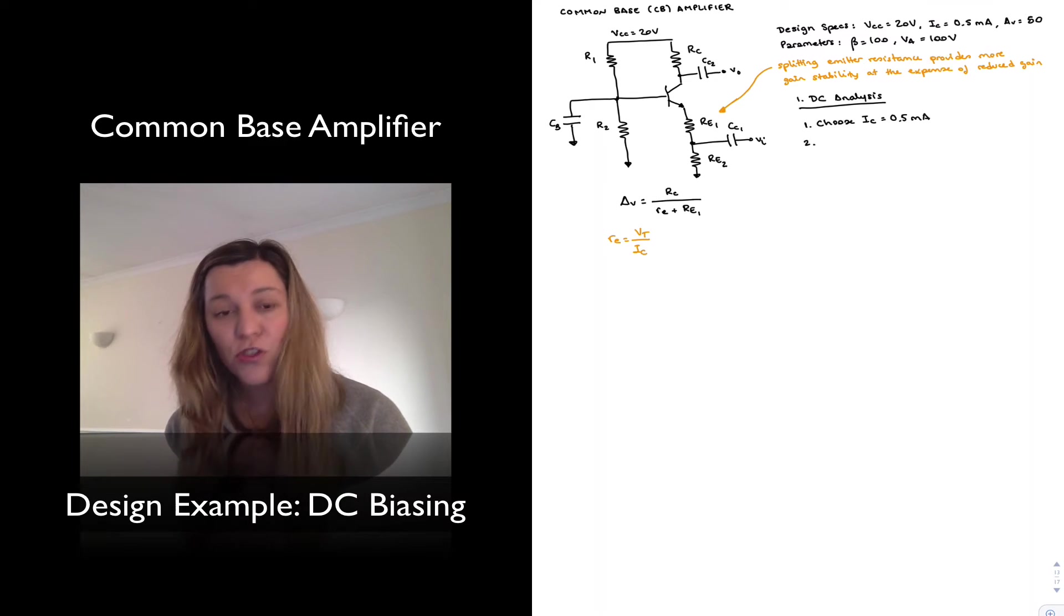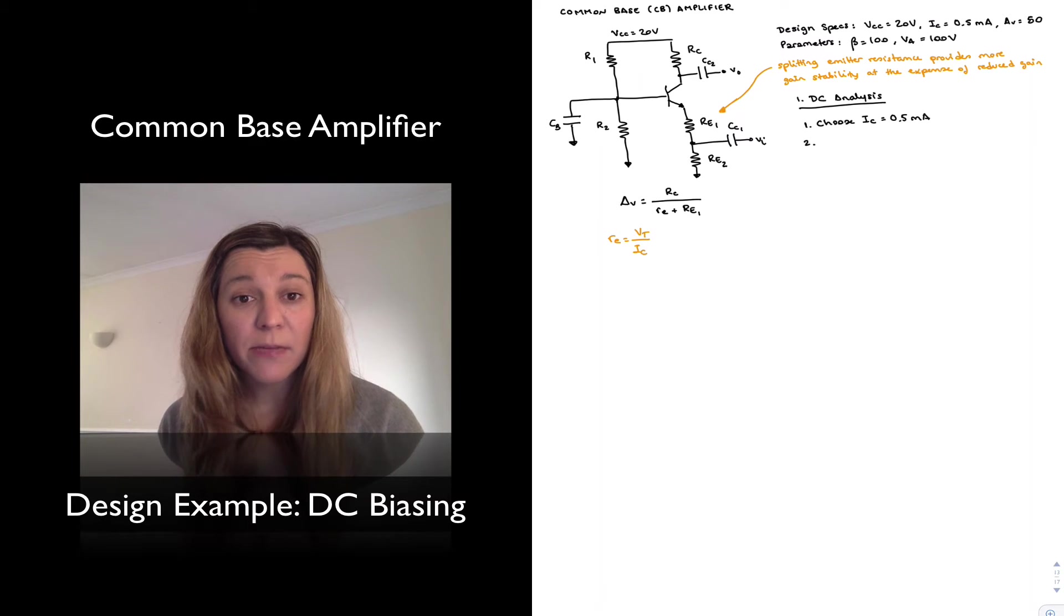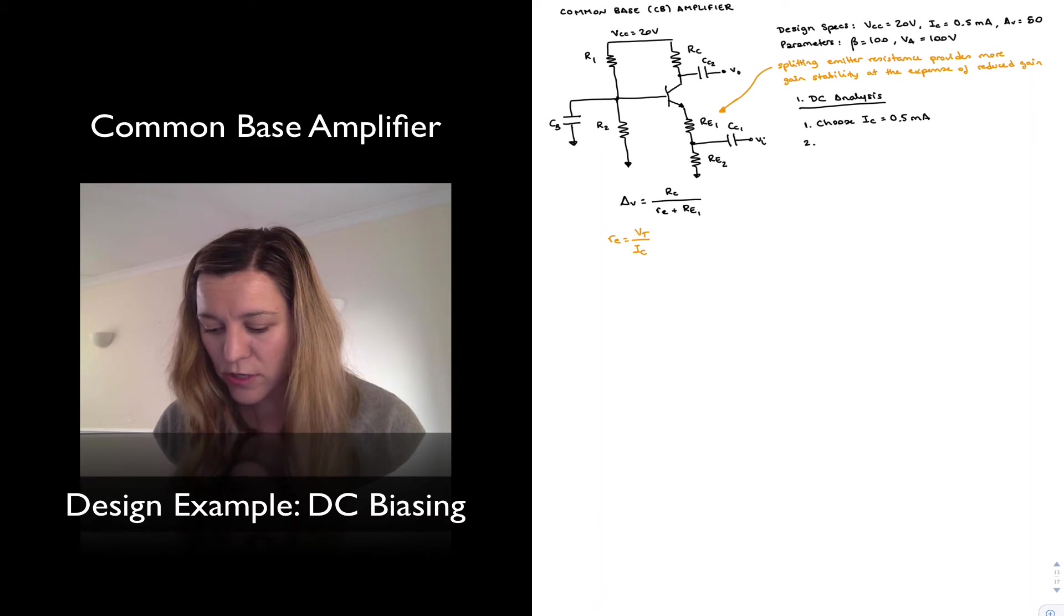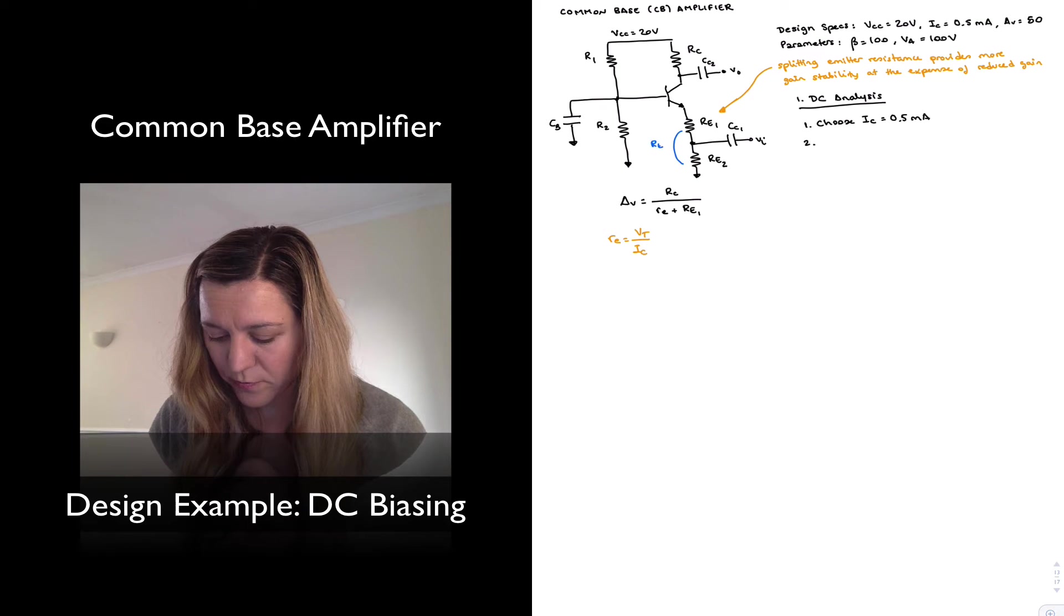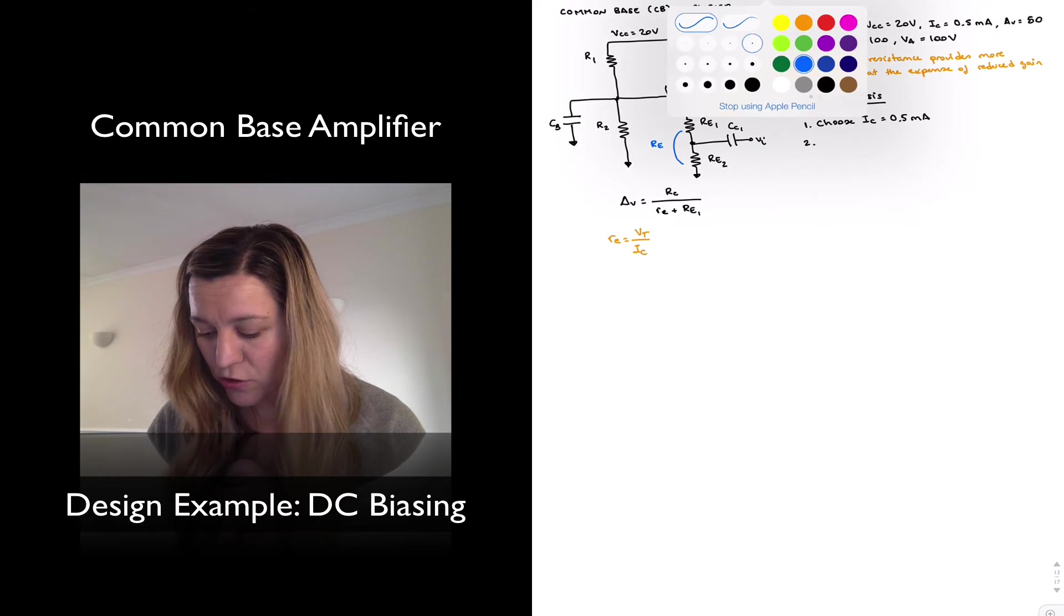Next, I'm going to select my value of RE, and I'm talking now about DC bias points. So for DC purposes, I will consider RE1 and RE2 to be lumped into a single capacitance RE, which is the series combination of the two.